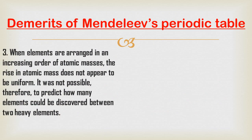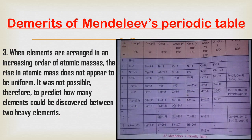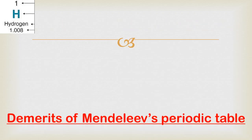The third demerit is that when elements are arranged in increasing order of their atomic masses, the rise in atomic mass does not appear to be uniform. It was therefore not possible to predict how many elements could be discovered between two heavy elements. For instance, the difference between carbon at 12 and nitrogen at 14 is very small, making it impossible to predict how many elements might be discovered between two heavier elements.